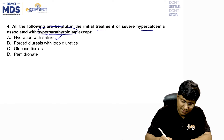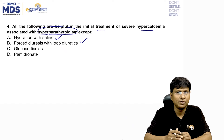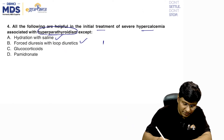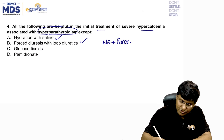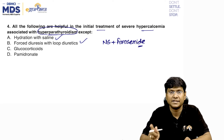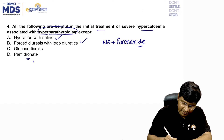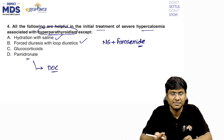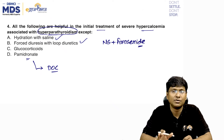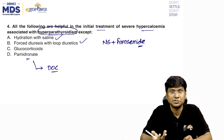Forced diuresis with loop diuretics: you give normal saline along with furosemide, which causes flushing out of calcium. Pamidronate is a bisphosphonate considered the drug of choice in patients with hyperparathyroidism causing hypercalcemia; it inhibits bone resorption.